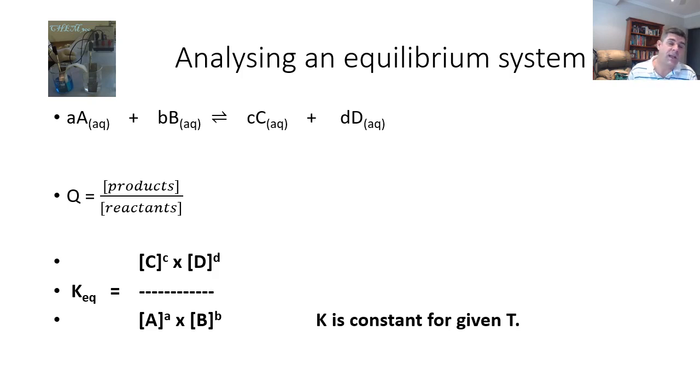But what we want to do now is to make it a more quantitative process. We want to actually start to put some numbers on our equilibrium systems and in order to do that we need to introduce a couple of new concepts. The first is the reaction quotient and the second thing is the equilibrium constant.